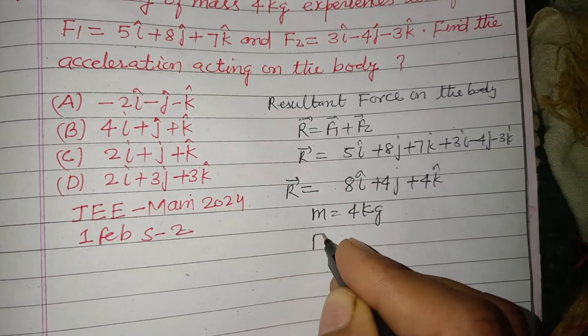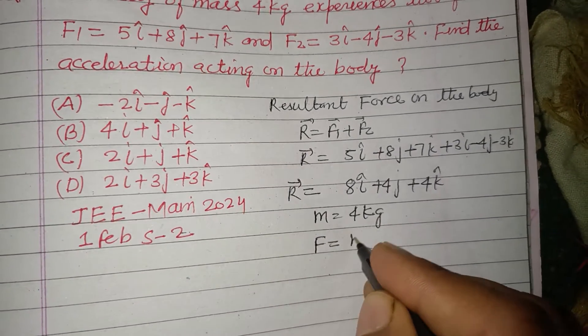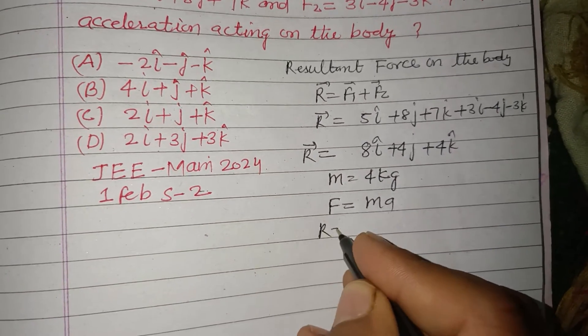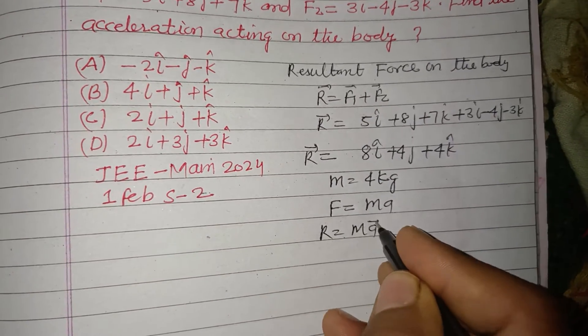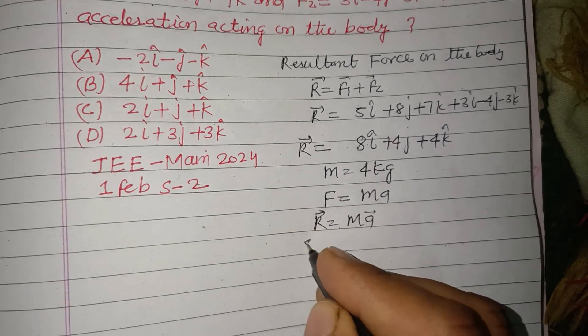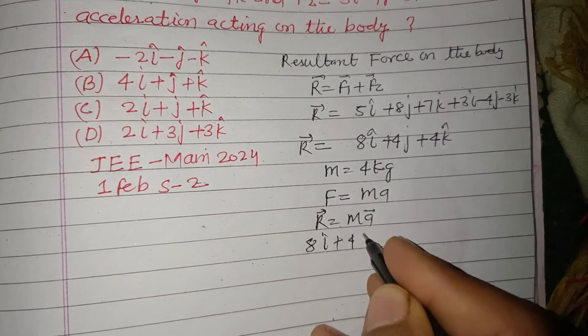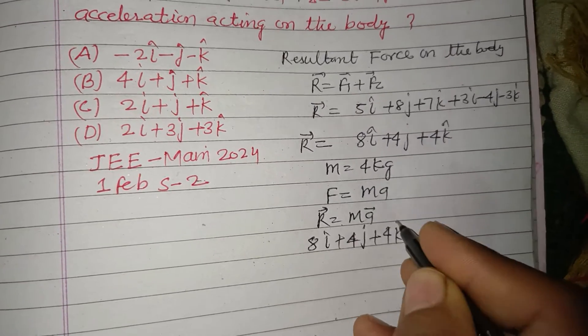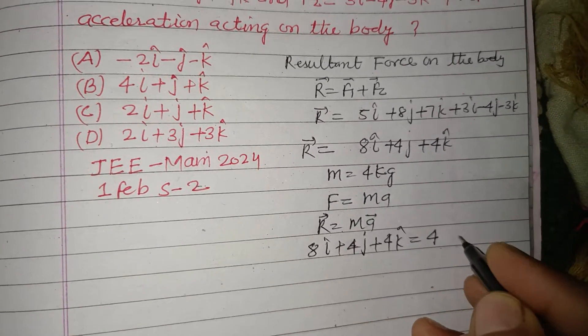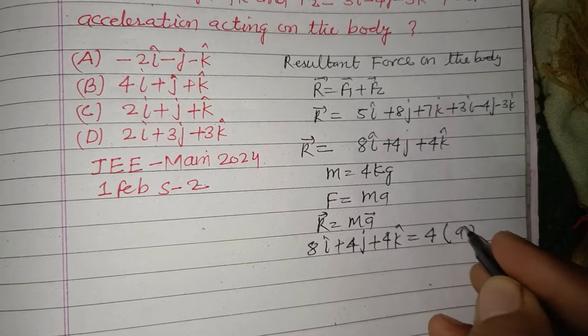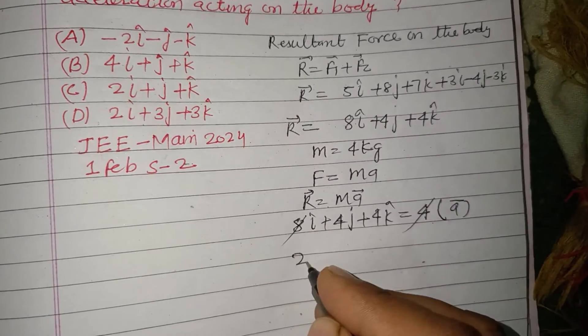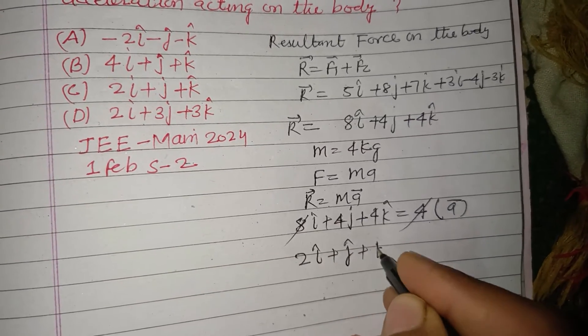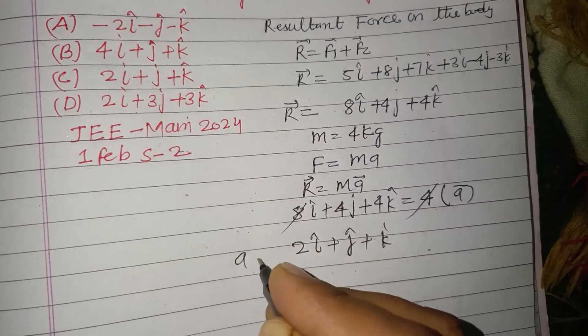Mass is given as 4 kilogram. So F equal to ma. Using this, therefore R equal to ma. The resultant force, R is 8i cap plus 4j cap plus 4k cap equal to mass is 4 into acceleration. So 8 divided by 4 is 2, 4 divided by 4 is 1, and 4 divided by 4 is 1. So a equal to this.